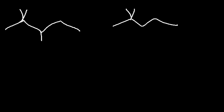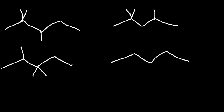Now going down to a five carbon chain, we need to add three methyl groups. We can put two on carbon 2 and one on 3, or two on carbon 2 and one on 4, or two on carbon 3 and one on carbon 2. We can also put one each on carbons 2, 3, and 4. Going down to a four carbon chain, we could put two on carbon 2 and two on carbon 3. And that's all for octane.